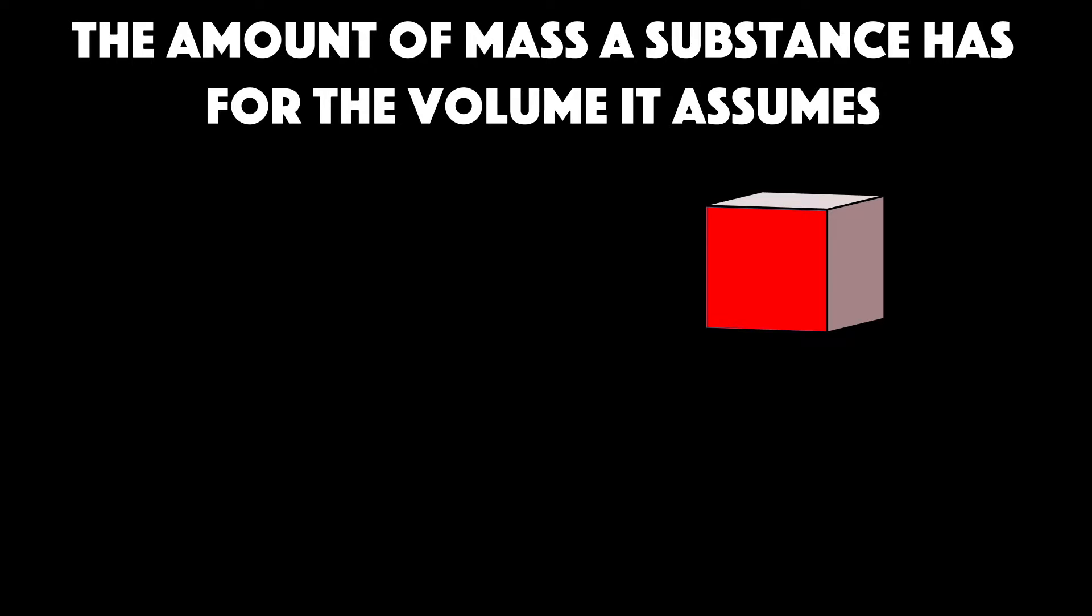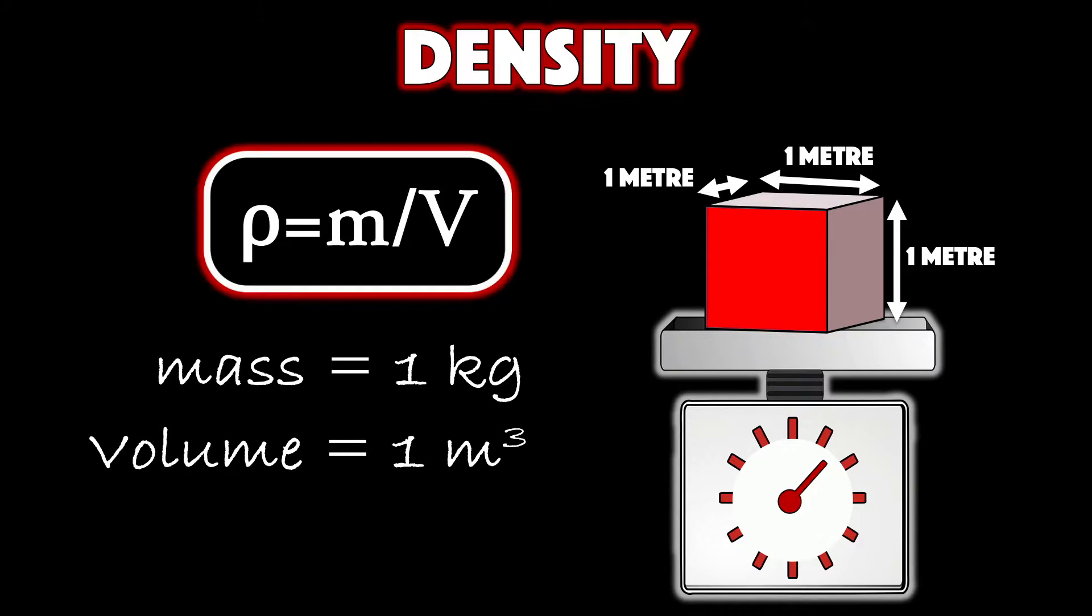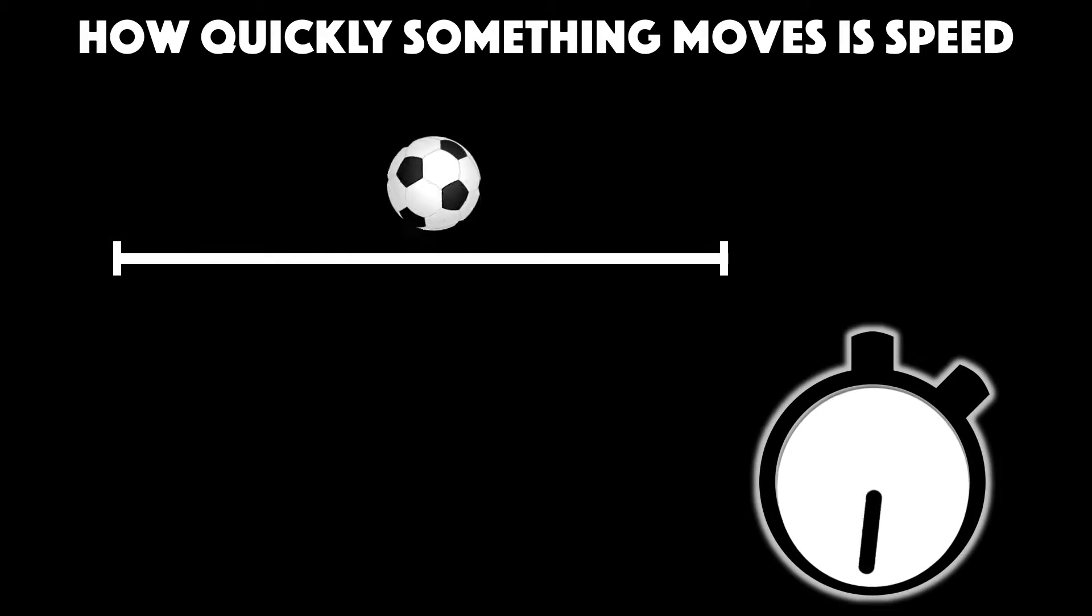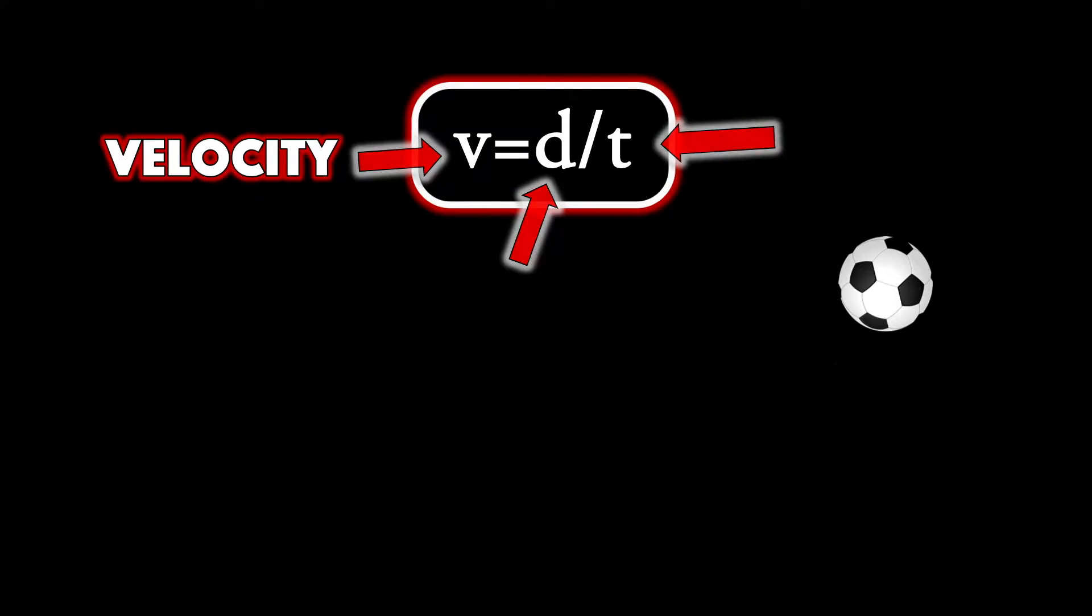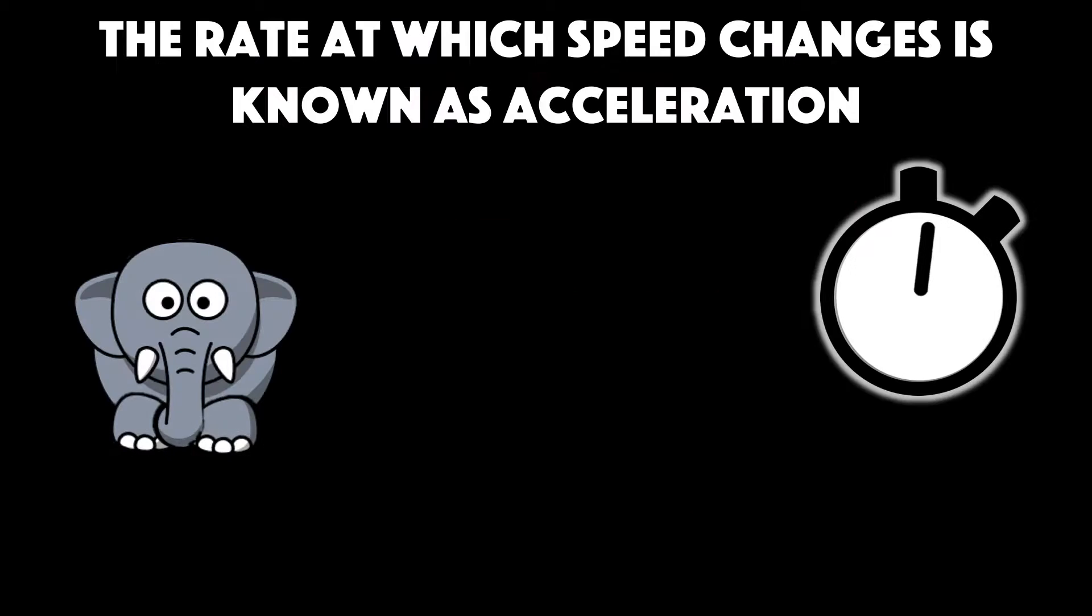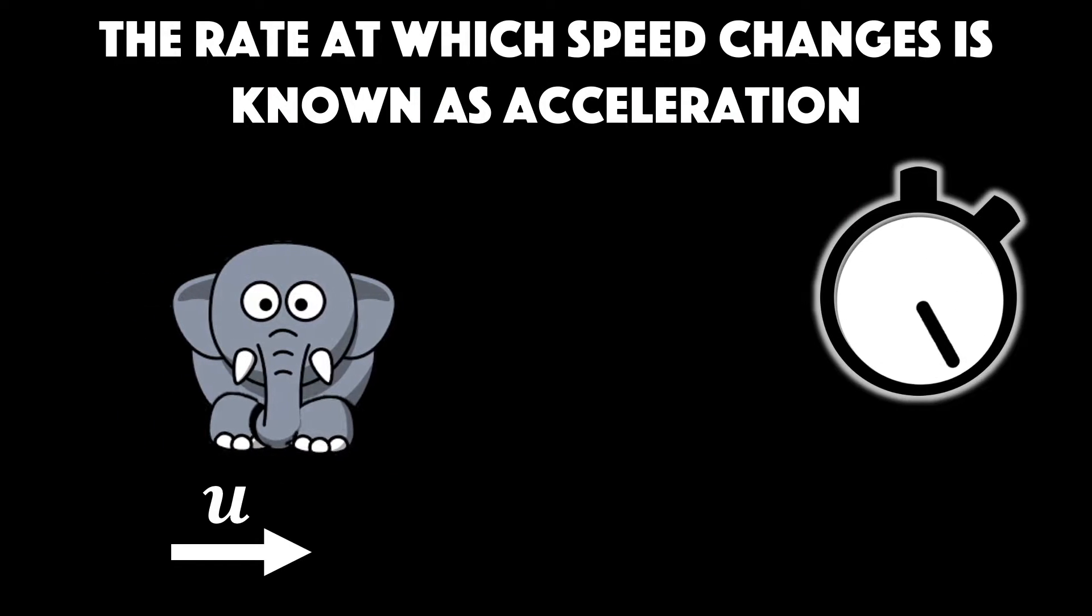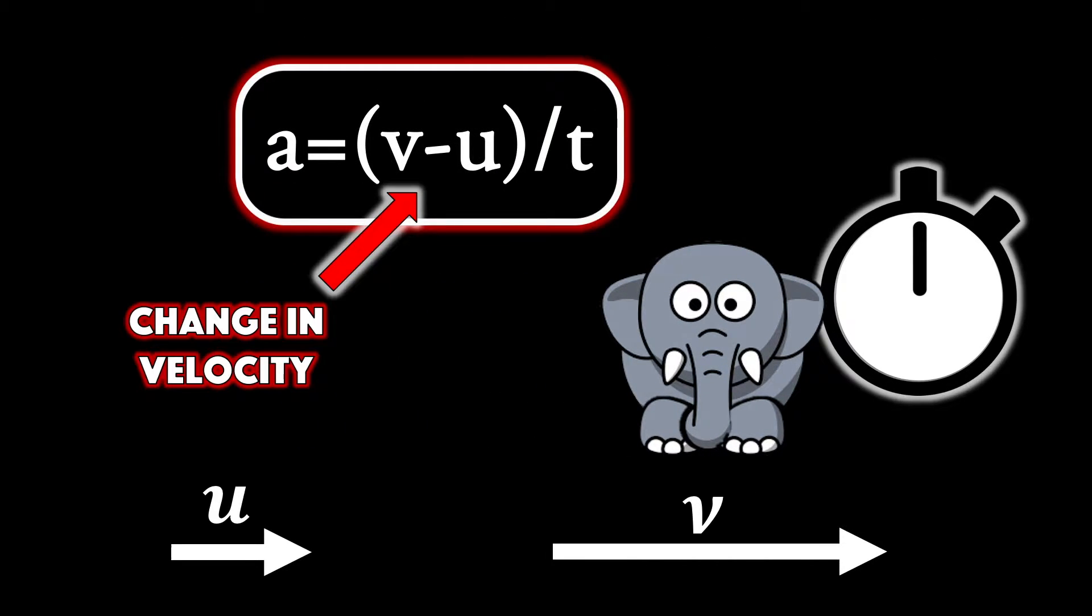The amount of mass a substance has for the volume it assumes is density m over v in kilograms per meter cubed. How quickly something moves is speed or velocity. It equals distance over time and momentum's m times v. The rate at which speed changes is known as acceleration. It's the change in the velocity divided by time taken.